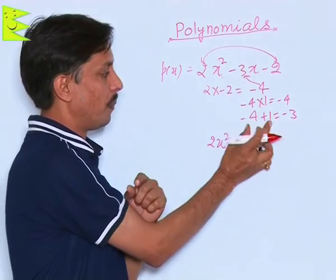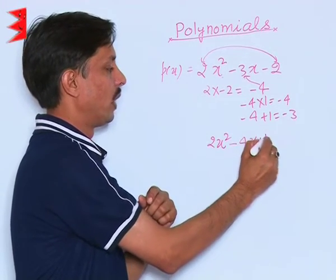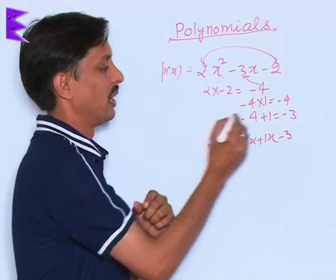I can say 2x² as it is, and I am splitting this middle term -3x by two values, -4 and 1. This becomes -4x + 1x - 3.